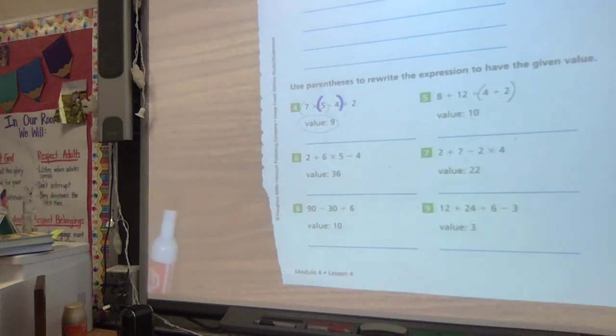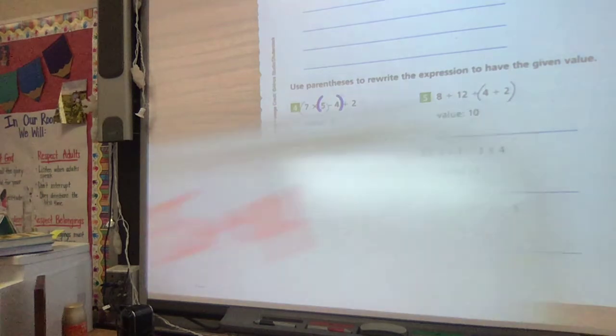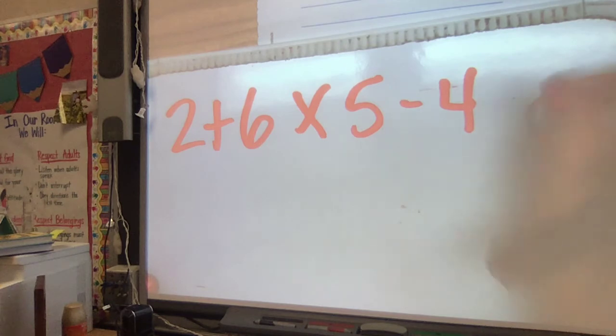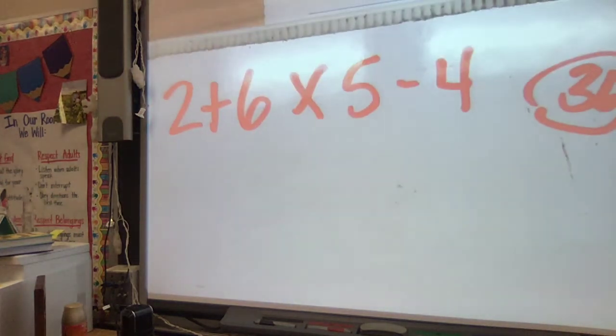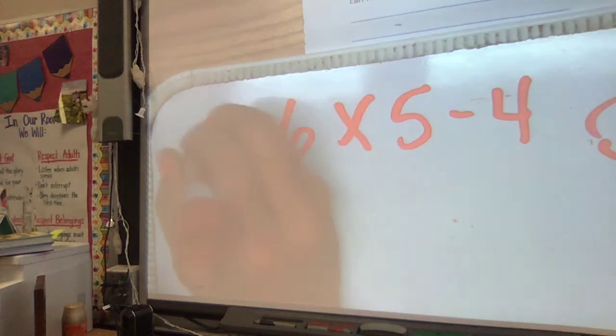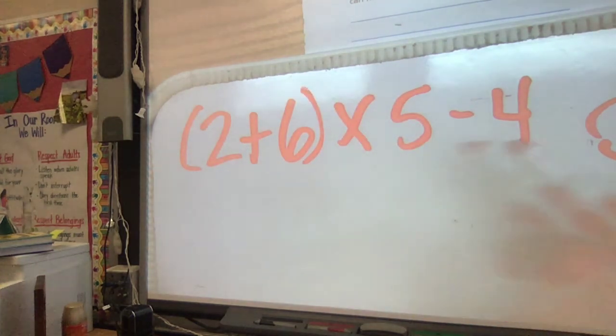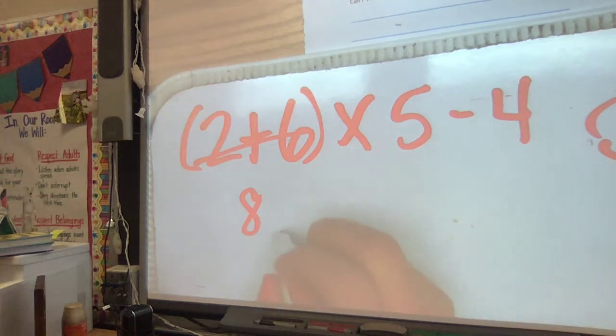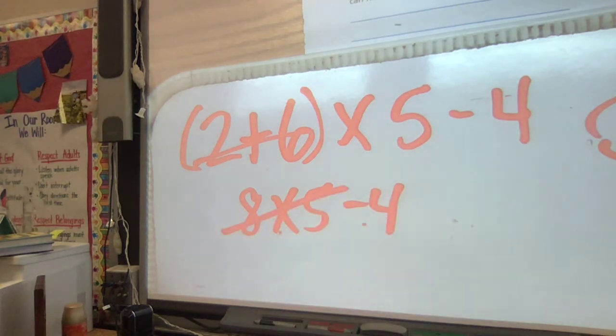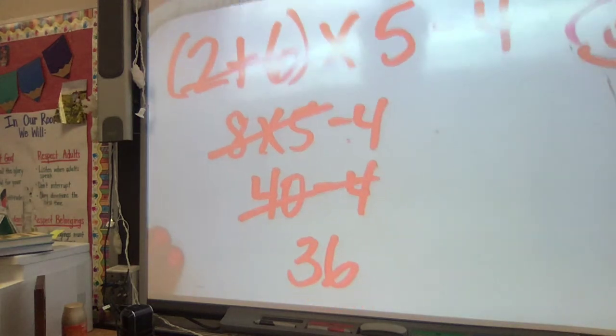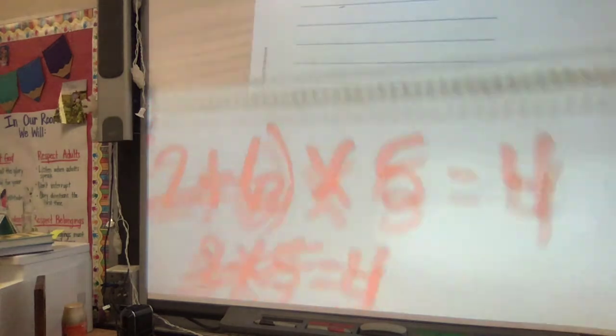Let's do one more like this and then we'll be done with this part. It says 2 plus 6 times 5 minus 4, and they want the answer to be 36. I like to just start at the beginning. If we do that, parentheses is first, 2 plus 6 is 8, and 8 times 5 minus 4 is left. I have multiplying and subtracting, so I know I multiply next. That's 40 minus 4, and that answer is 36. That one worked the first time. So nice.